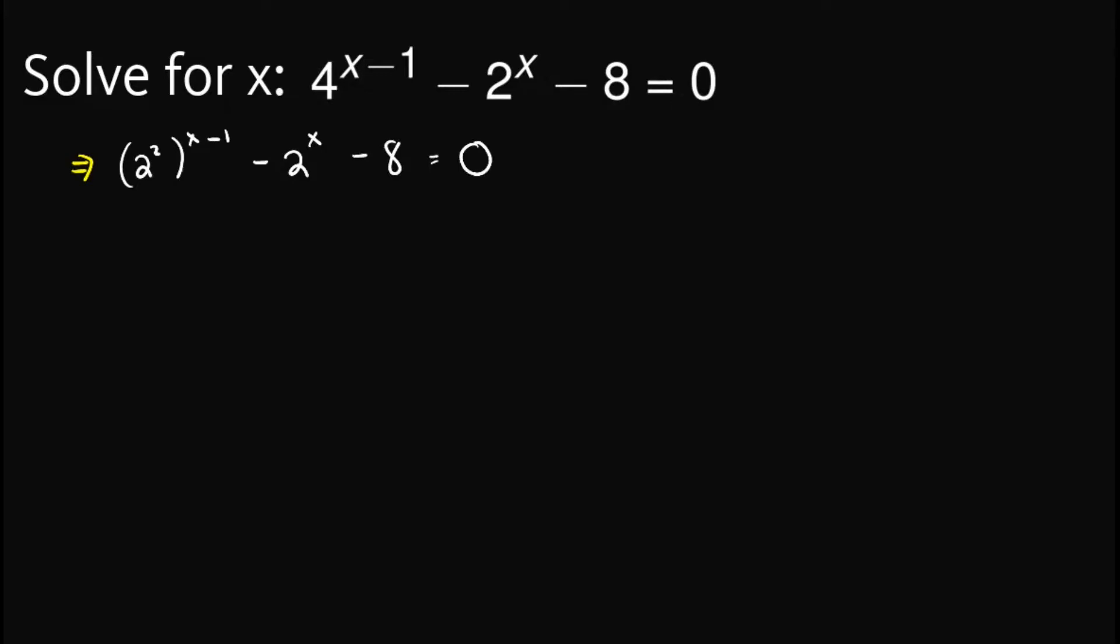Now, from laws of exponents, we can multiply this exponent out here. So we will have 2 raised to 2x minus 2 minus 2 raised to x minus 8 is equal to 0.